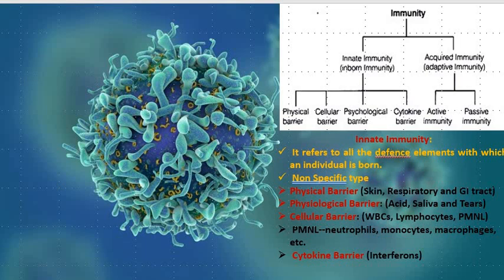Physiological barriers act as the secondary line of defense — acid present in the stomach (HCl or hydrochloric acid), saliva in the mouth, and tears in the eyes prevent the entry of pathogens, microbes, or any foreign invaders. For cellular barriers, special types of cells in our body — such as white blood cells, lymphocytes, and PMNL (polymorphonuclear leukocytes, including neutrophils, monocytes, and macrophages) — are capable of targeting and killing disease-causing agents.